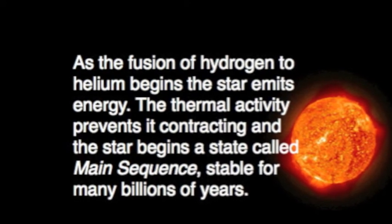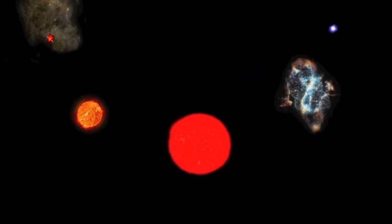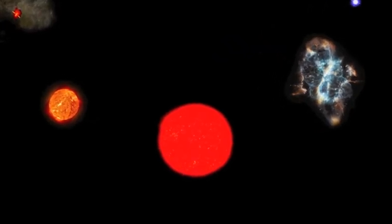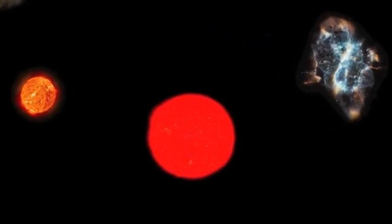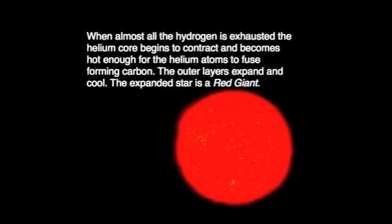The core of the star, now almost all helium, begins to contract and the outer layers begin to expand. They cool as they expand and shine less brightly. The expanding star is now called a red giant.